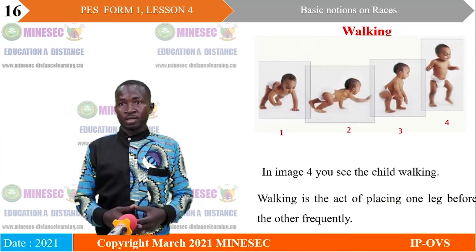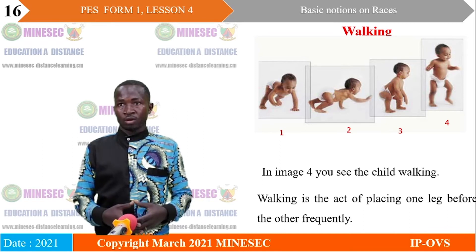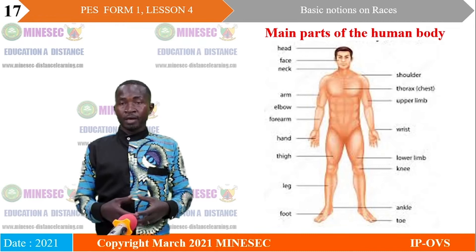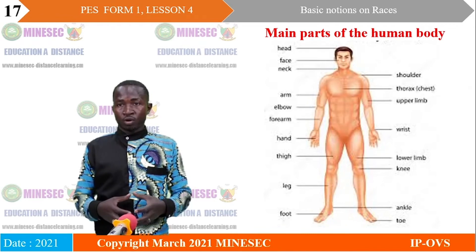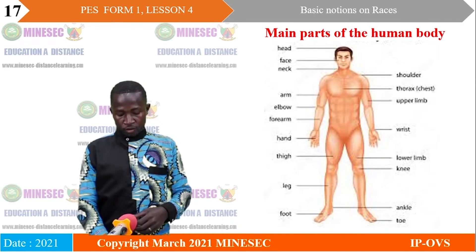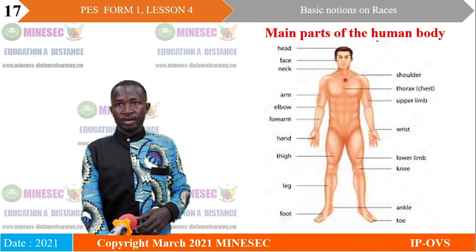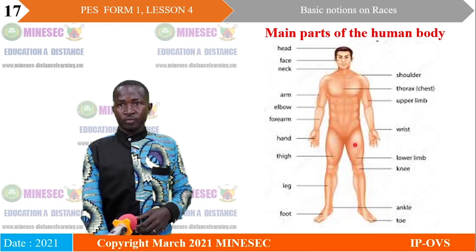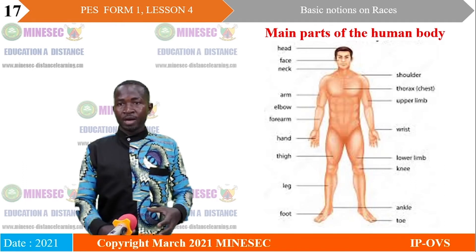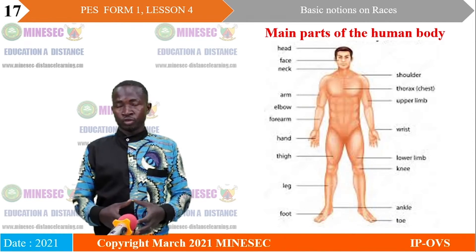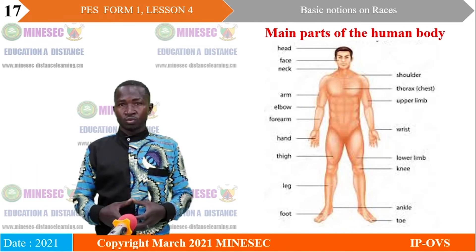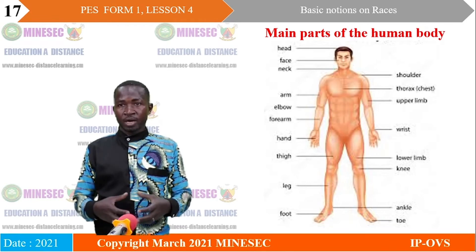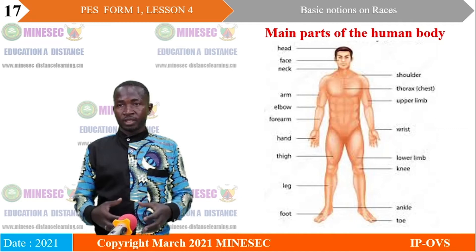Looking at the images of the human body, you can see the head, the upper limbs — the two hands — and the lower limbs — the two legs. The human body is fully involved in activities of locomotion, especially during races. In order to understand races, we need to understand the human body and how the different parts are implicated in races. The main parts are: A — the lower limbs; B — the upper limb, which is the arm; C — the foot; and D — the hand.